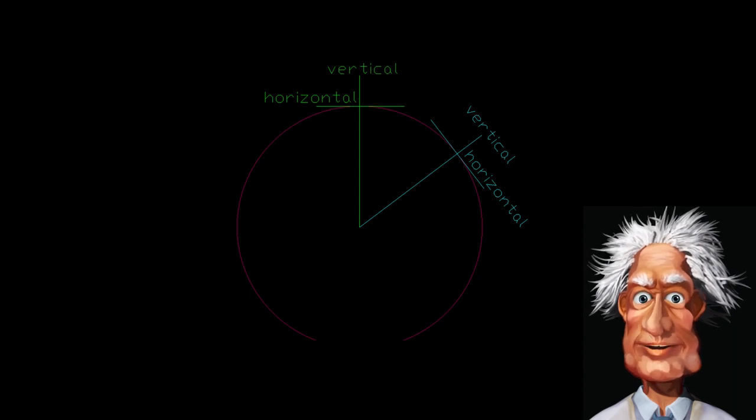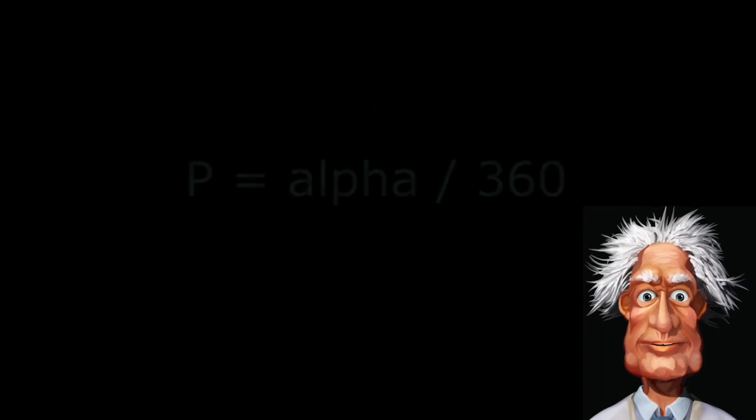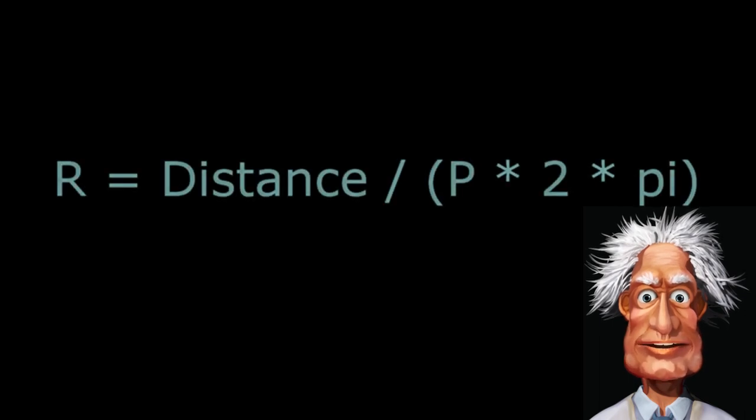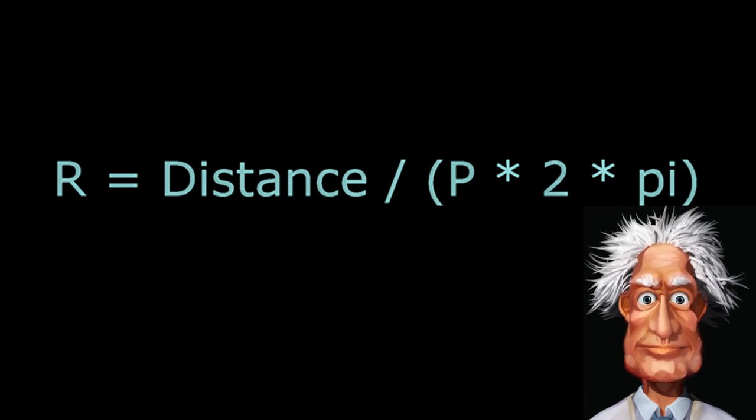If that were so, it should be possible to calculate the radius of that sphere. And that can be done using this simple set of equations. The proportion p of the angle to the total circle would be alpha divided by 360. This proportion equals the proportion of the distance to the circumference of the circle. So we can derive the radius using this formula: r equals the distance over the proportion p times 2 times pi.